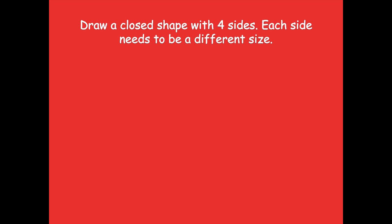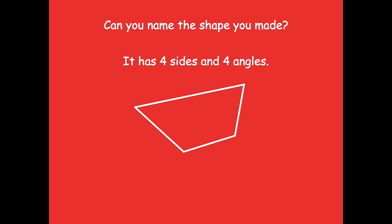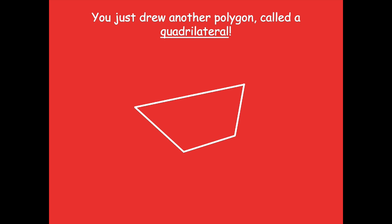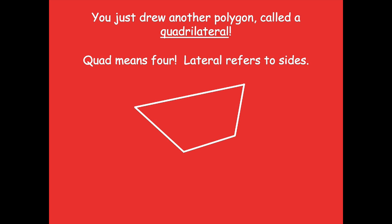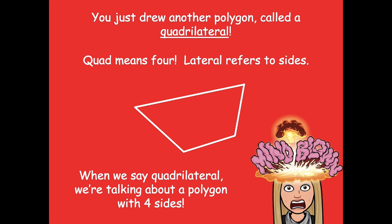Here's what I came up with. Can you name the shape you made, even if it looks different than mine? Mine just has four sides: one, two, three, four. I can't think of the name for this shape — it looks kind of funny — but I do know it has four sides and four angles. You just drew another polygon called a quadrilateral. Quad means four and lateral refers to the sides, so a quadrilateral is a polygon with four sides. A fun trick: people call four-wheelers 'quads' because they have four wheels — same idea!